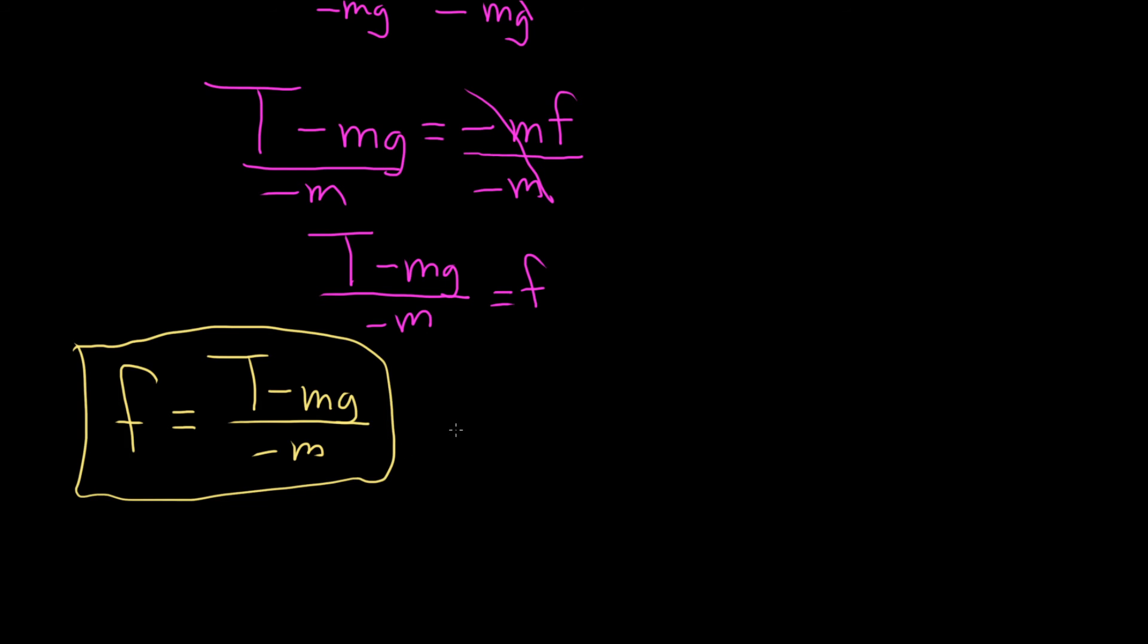If the negative sign on the bottom is not nice, what you can do is the following. You can rewrite it as follows. So it was negative m. And it's really a negative 1. And so what you can do is you can bring it up. So it'll be like this, negative 1 times T minus mg over m. You can take that negative 1 on the bottom and just bring it upstairs.